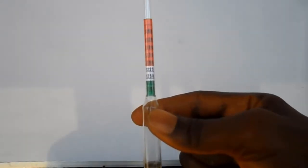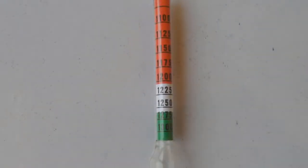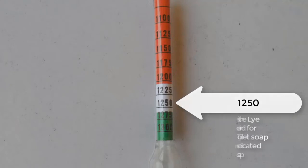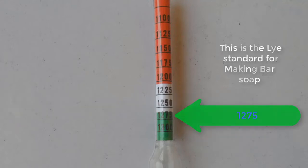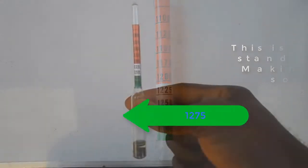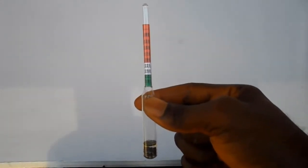Now pay attention to what I'm going to say here. When preparing lye solution for toilet soap and medicated soap, the standard reading of the hydrometer should be at the 1250 mark, that is within the white calibration. But when preparing lye solution for bar soap, the standard reading of the hydrometer should be at the 1275 mark, that is at the green calibration.